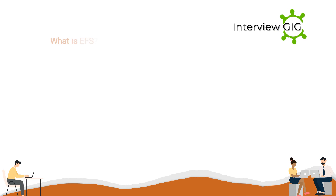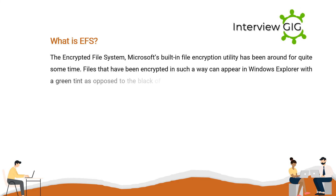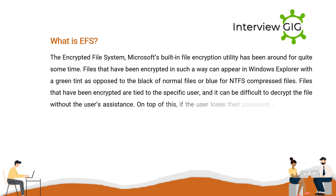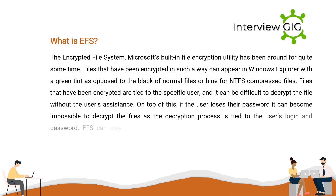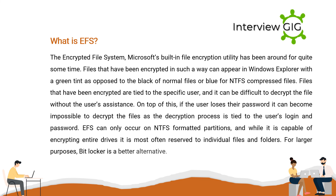What is EFS? The Encrypted File System is Microsoft's built-in file encryption utility. Files encrypted this way appear in Windows Explorer with a green tint, as opposed to the black of normal files or blue for NTFS compressed files. Encrypted files are tied to the specific user, and it can be difficult to decrypt the file without the user's assistance. If the user loses their password, it can become impossible to decrypt the files, as the decryption process is tied to the user's login and password. EFS can only occur on NTFS formatted partitions.